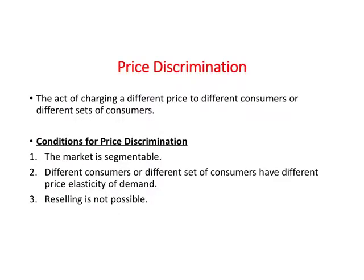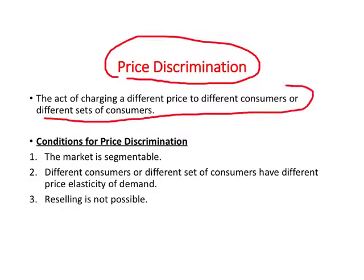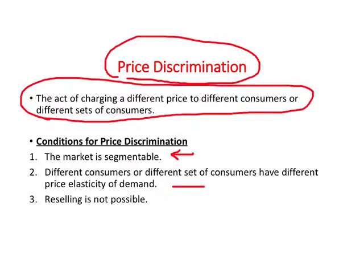One way a monopolist can make more profits and exploit monopoly power is through price discrimination — the act of charging a different price to different consumers or different sets of consumers. The conditions required are: first, the market can be segmented into parts; and second, different consumers have different price elasticities of demand.